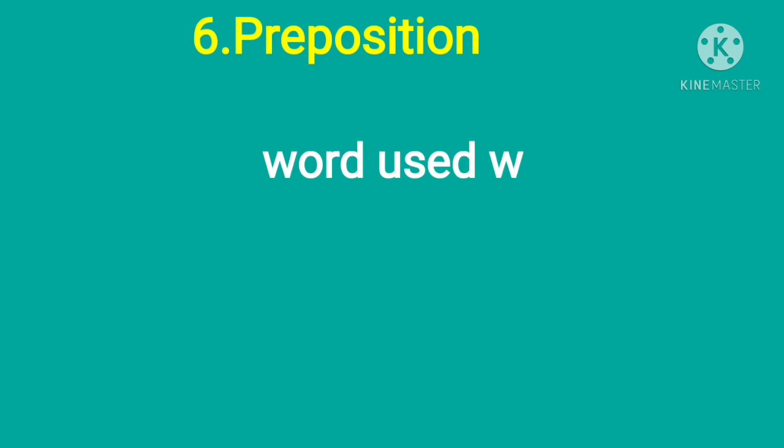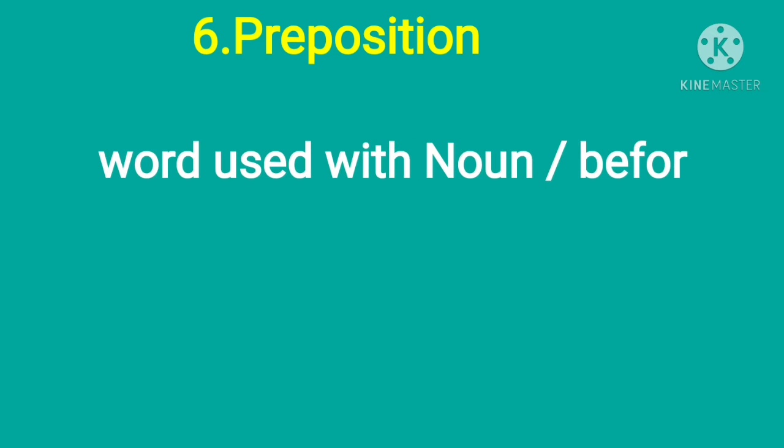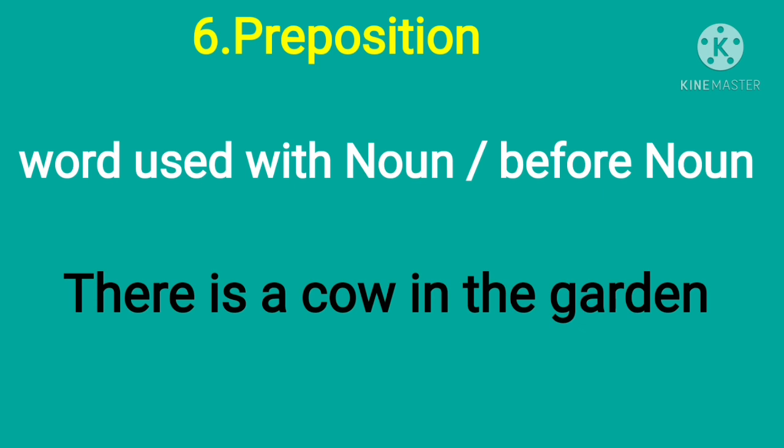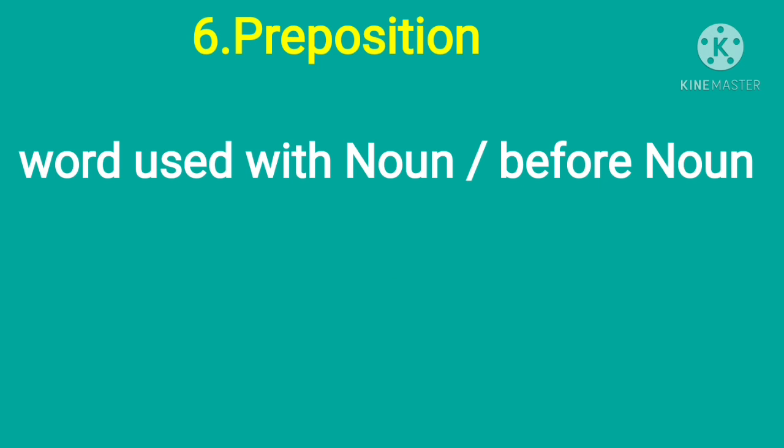Now come to the prepositions. A preposition is a word used with a noun or a pronoun. It is used before. For example: there is a cow in the garden. 'In' is the preposition. Another one: the girl is fond of music. 'Of'—these small words like in, of, under—these are known as prepositions and are used before a noun or pronoun.